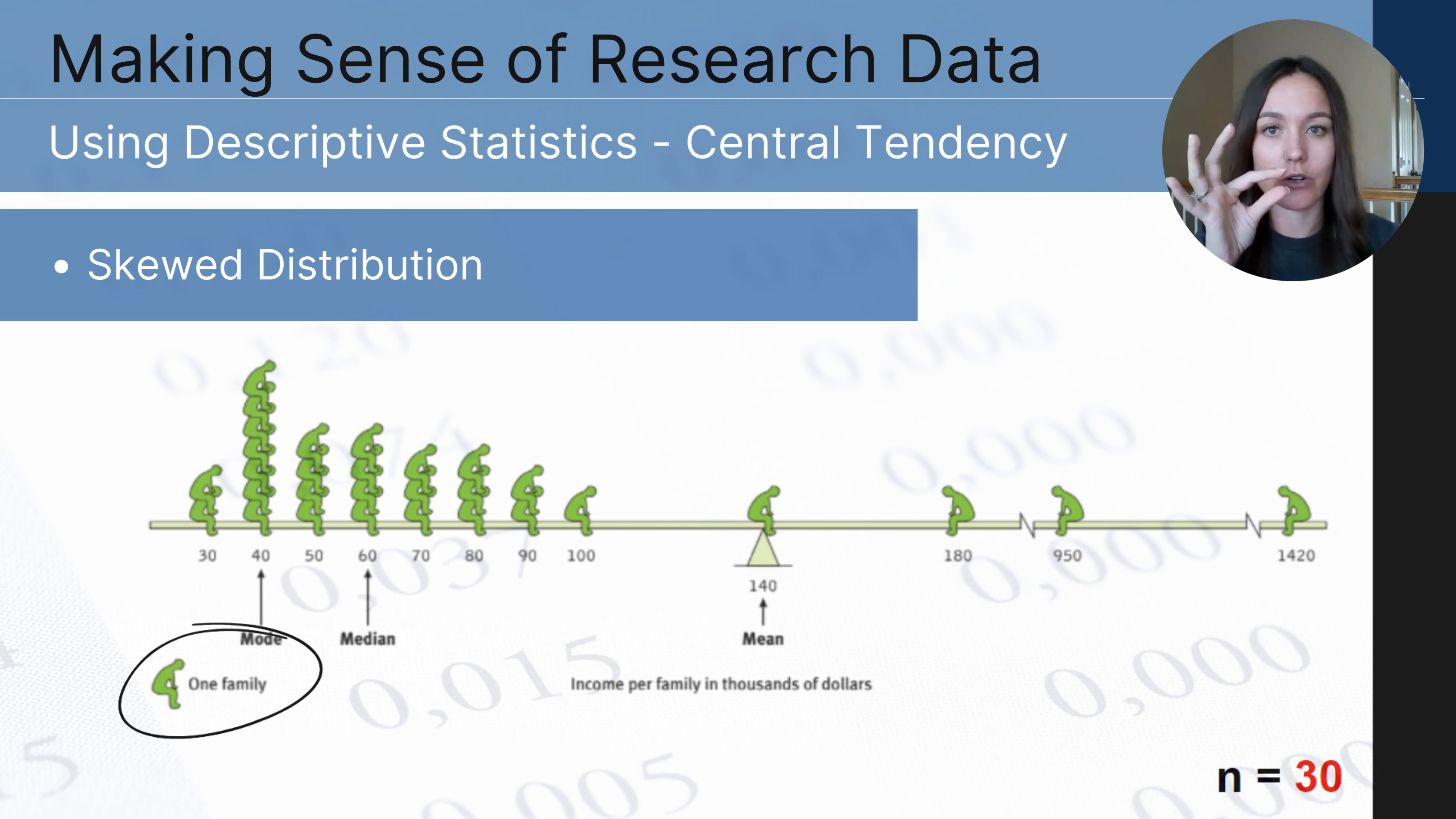Each figure on the diagram represents one family. Notice on the right side it says n equals 30 so we have a sample of 30 families. The numbers that stretch across the bottom or the x-axis represent income per family in thousands of dollars.